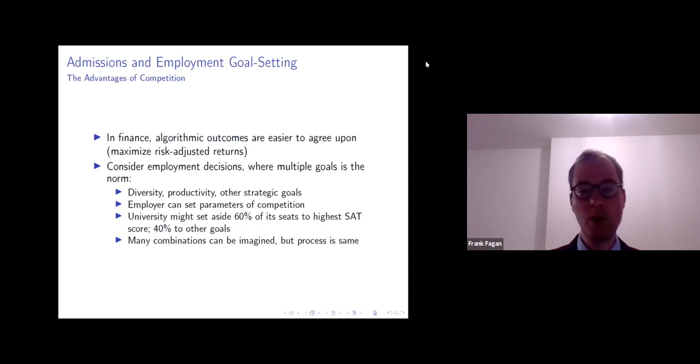But with competing algorithms, what we have in mind is more of a process than the substance. So the employer or the university can set the parameters of the competition. And then whatever those parameters are, the competitors try to achieve. So for instance, a university might set aside 60% of its seats to the highest SAT score, and then 40% to other goals, or perhaps some other combination can be imagined. But this process of competition, once the goal is set, is more or less the same.